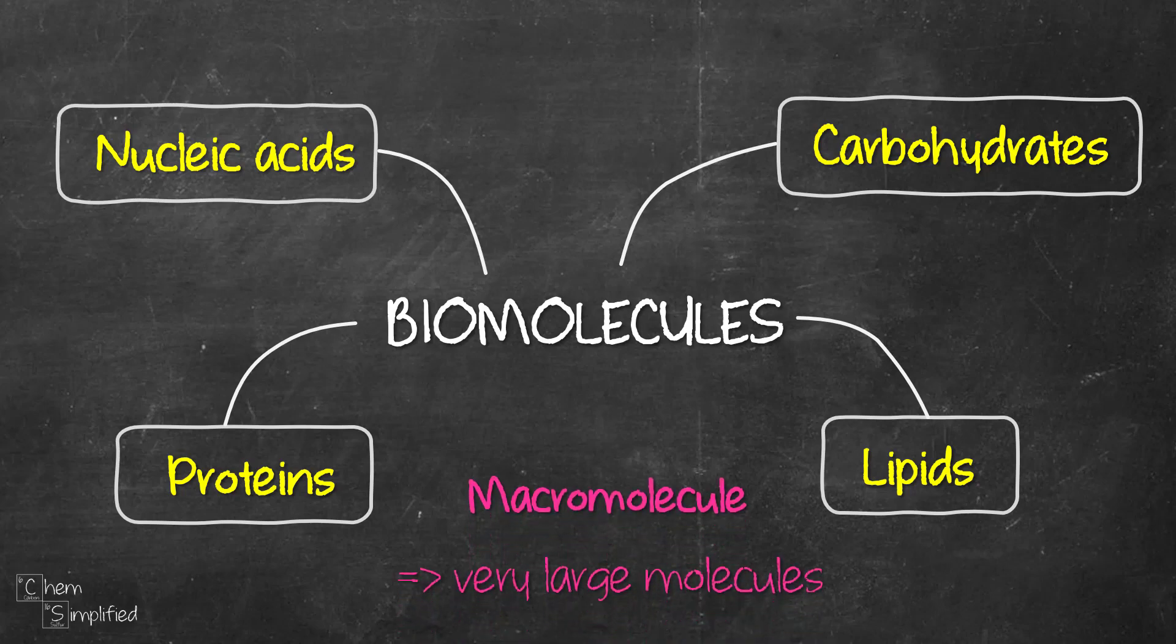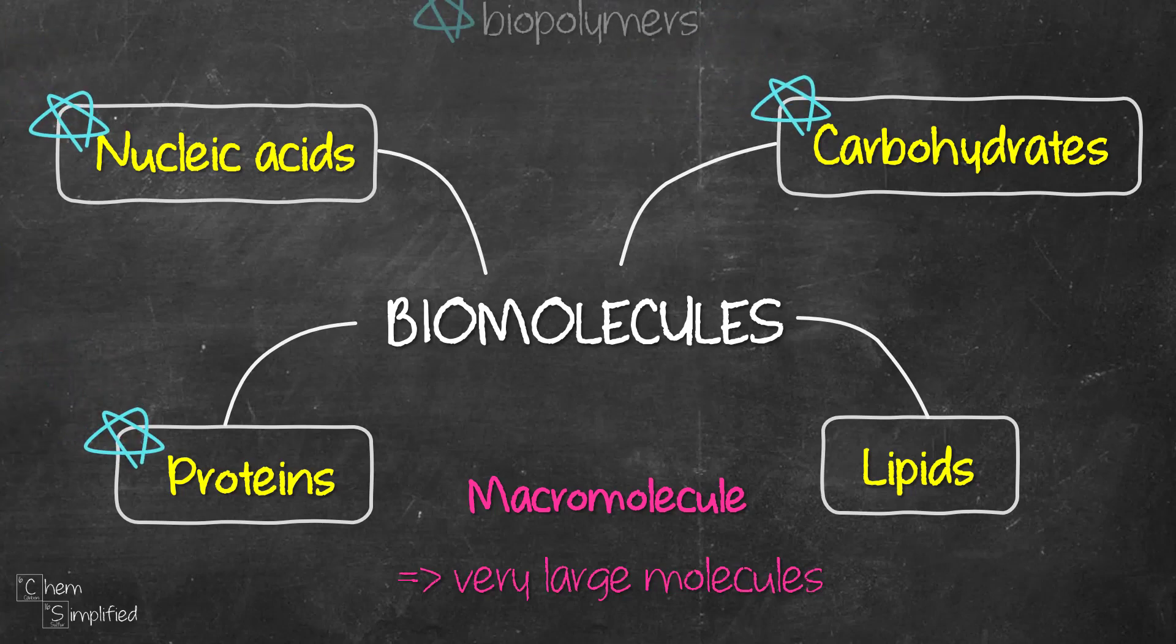These are macromolecules, which means they are very large molecules containing thousands of covalently bonded atoms. Carbohydrates, proteins, and nucleic acids are biopolymers, which are made out of smaller building blocks called monomers.